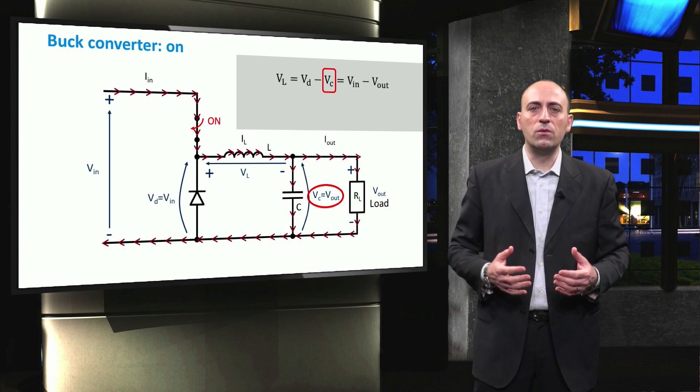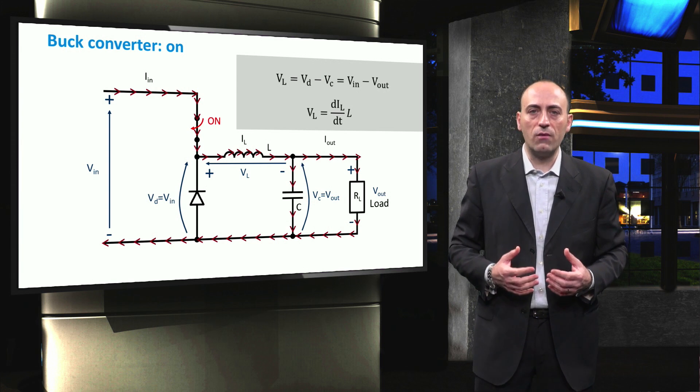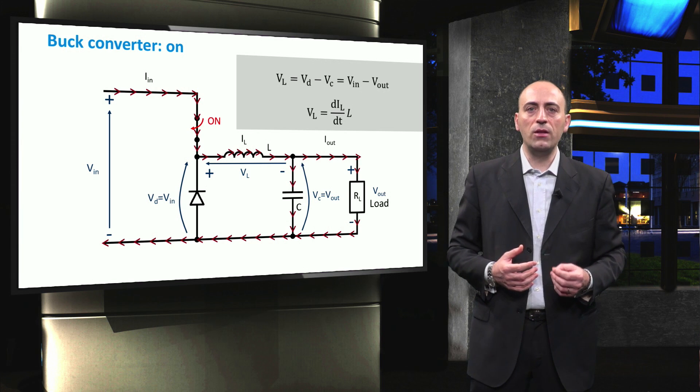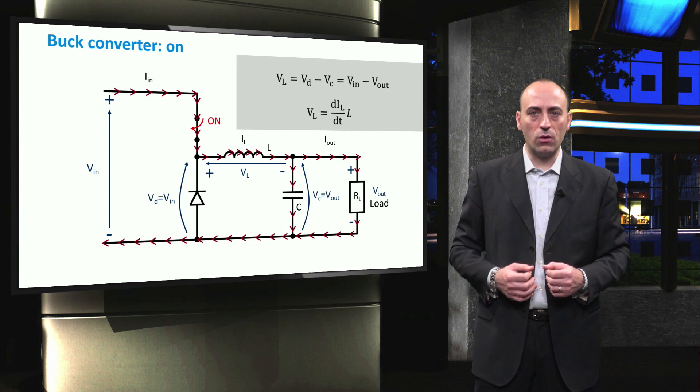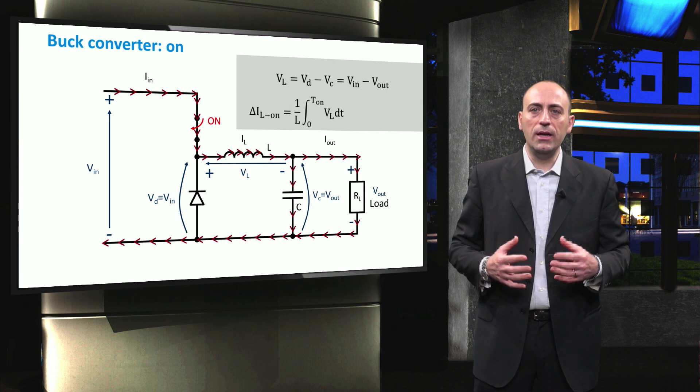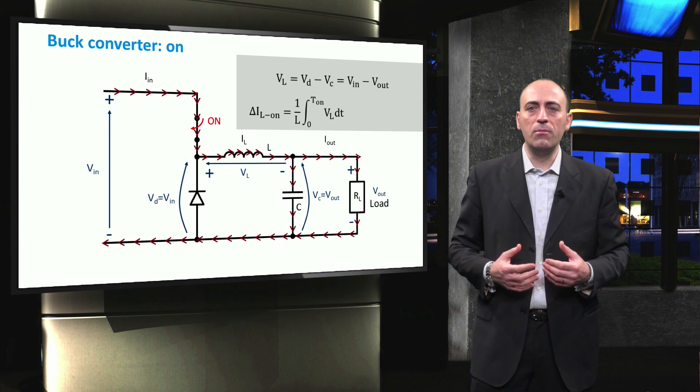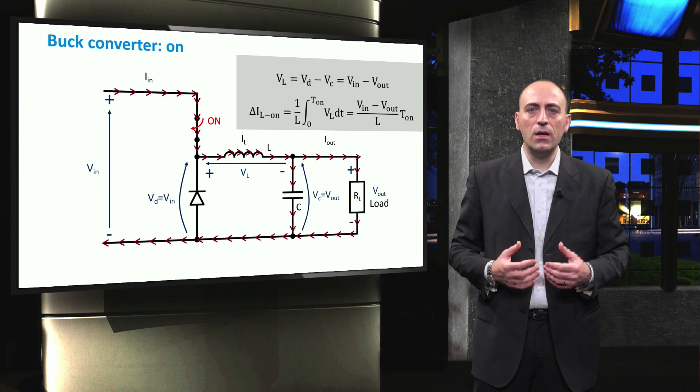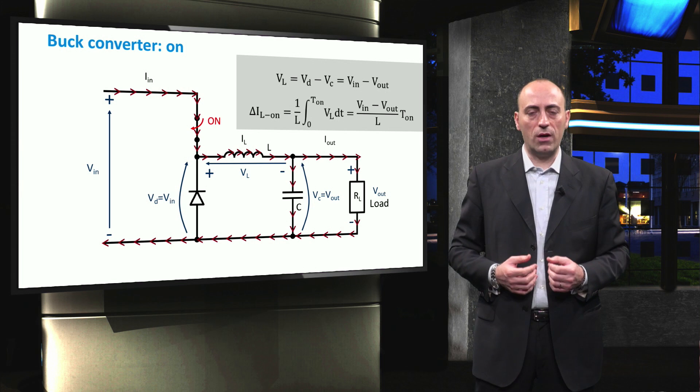Now, in the previous video, we saw that the inductor works according to Lenz's law, for which the time derivative of current flowing through the coil is linked to the voltage across the inductor via the proportionality factor L, known as the inductance of the coil. Moving from the derivative to the integral form of Lenz's law, the increase of current in the inductor in the ON mode can be written as the difference of the input and output voltages divided by the inductance and multiplied by the duration of the ON time.